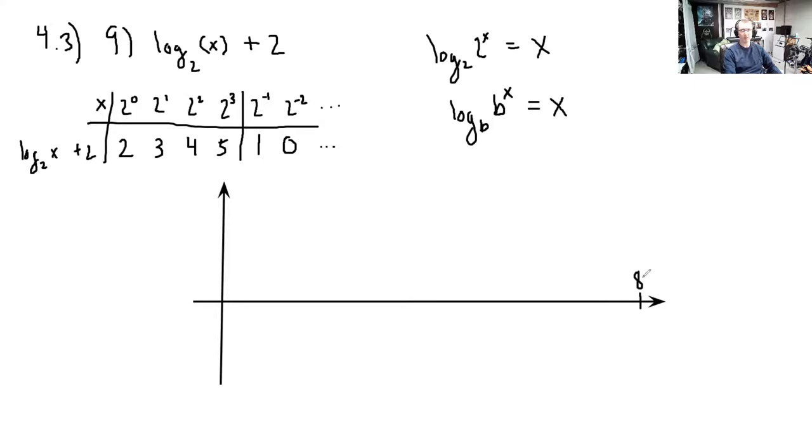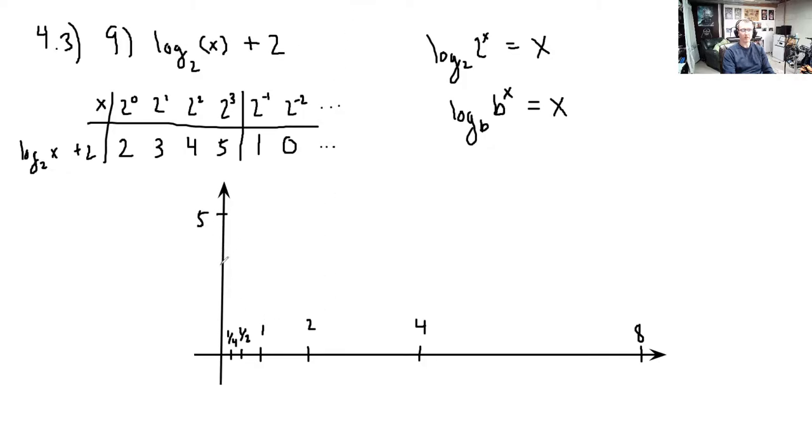So it looks like my inputs go all the way up to 8. We'll say this is 8 here. That's 2 to the 3rd. So that makes this 4. That's 2 squared. That makes this 2. That makes this 1. And then we've got 1 half, which is 2 to the negative 1st. And 1 fourth, which is 2 to the negative 2nd. So these are the x values that I've plugged in up here. And my y values are here. So it goes up to 5. So this will be 5. And we need to go down to 0. So I'll slide this down just a little bit because we don't need any of those negative values here. So we'll make this 5 still. And then here's halfway. That's okay.